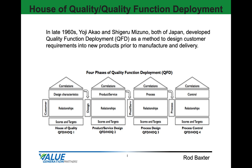As depicted in the image, it consists of four phases or houses, starting with customer requirements and design characteristics and managing through design of the product or service, design of the process, and design of the controls.